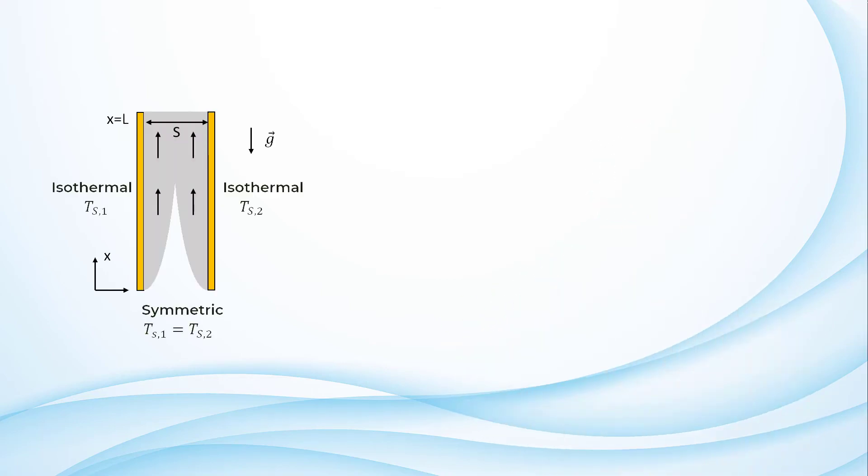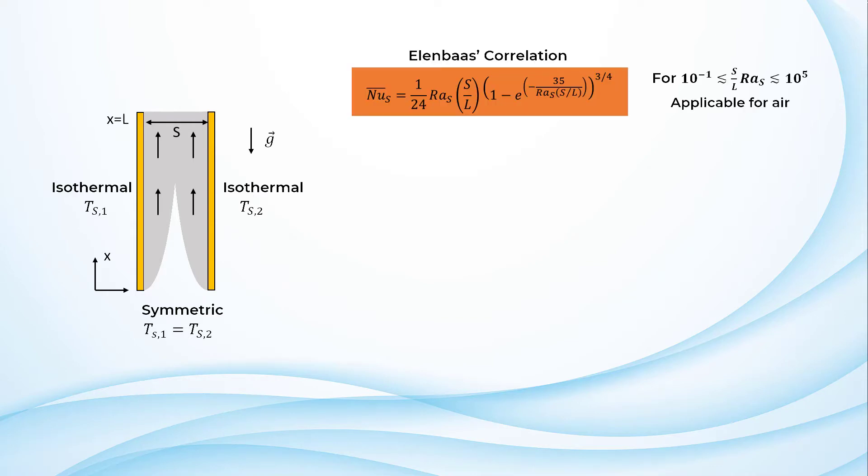For a vertical channel at symmetric isothermal conditions, i.e., TS1 is equal to TS2, Ellen Bass proposed the following correlation. This correlation is applicable only for air and the Rayleigh numbers in the range shown here.